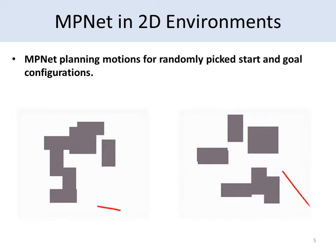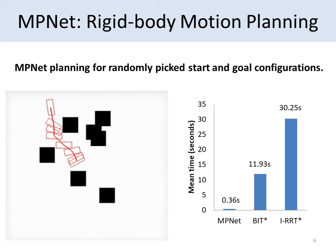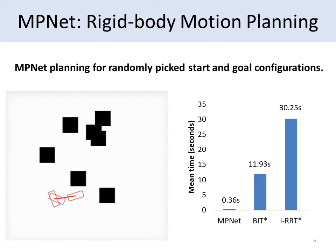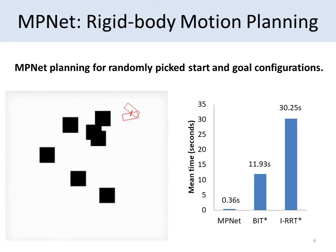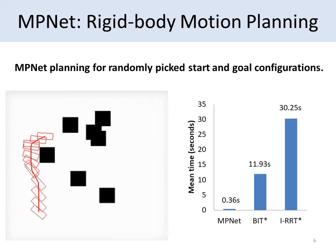These videos show real-time path generation by MPNet between a randomly selected start and goal pair in the obstacle-free space. The video on the left shows MPNet solving the rigid body planning problem, also known as the piano mover problem, in real-time. The graph on the right compares the mean computation time of MPNet, BIT*, and Informed RIT* for the rigid body planning problem. MPNet is about 100 times faster than Informed RIT* and 30 times faster than BIT*, because no branching search strategy needs to be carried out.